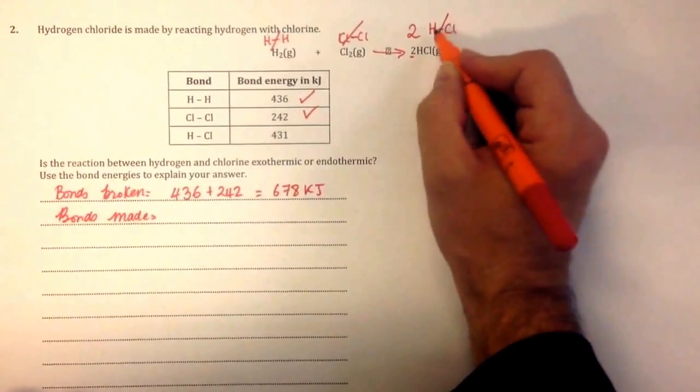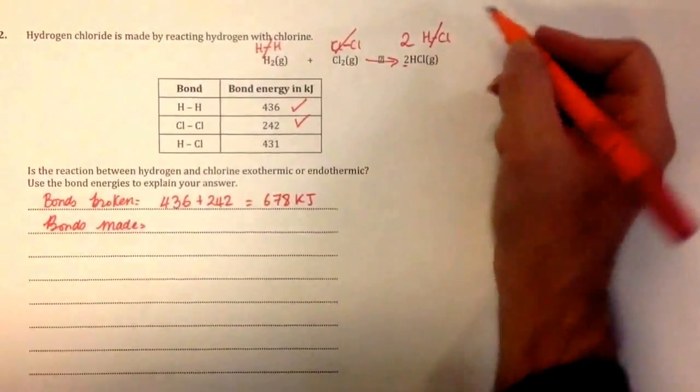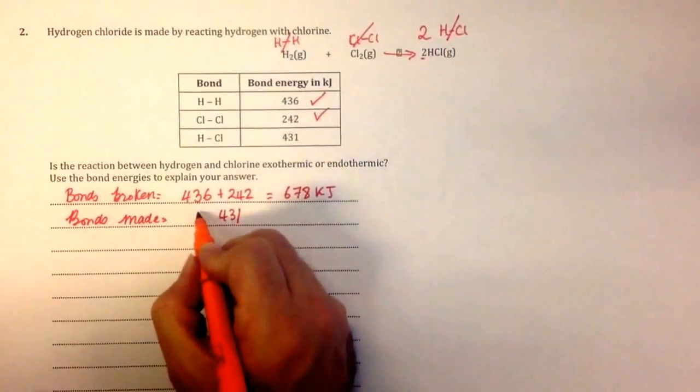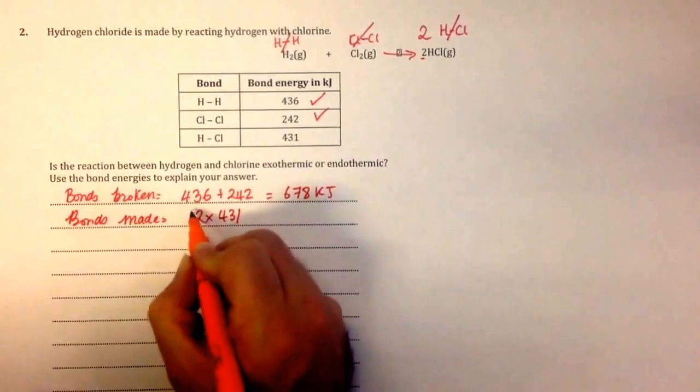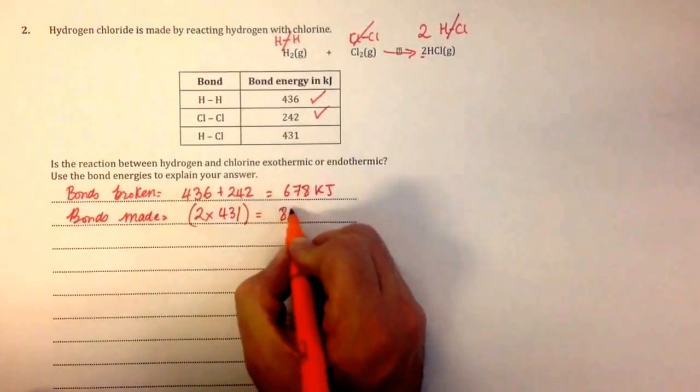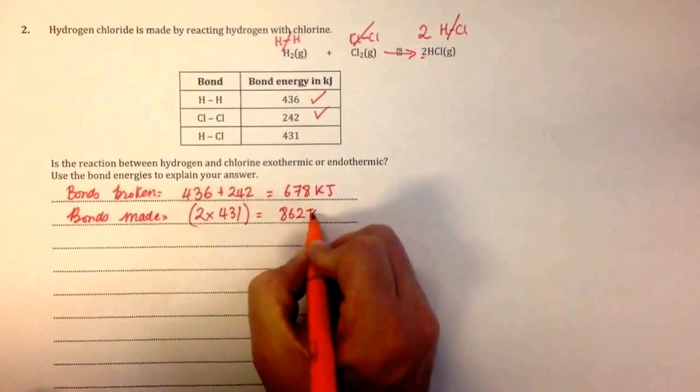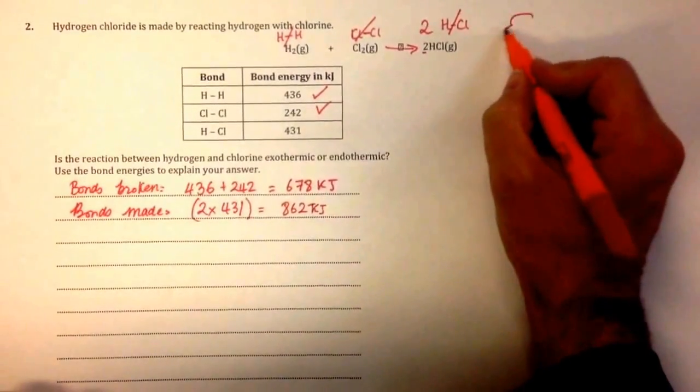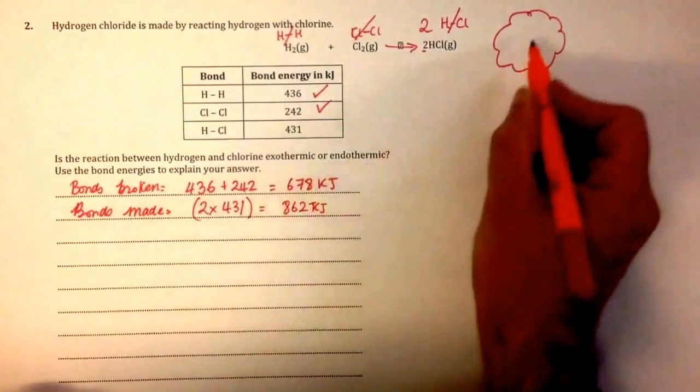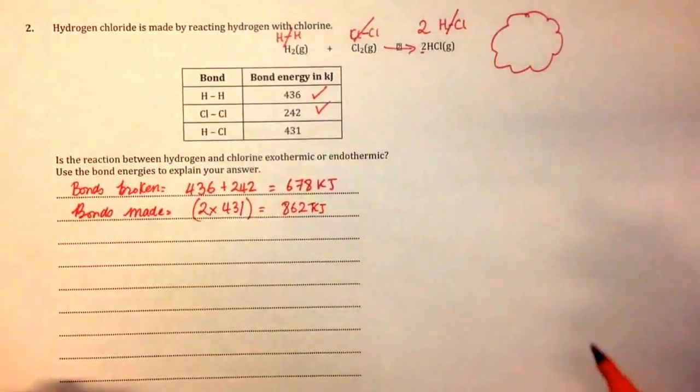The value of the HCl bond is 431, but there are two molecules. So you say 2 times 431 is 862 kilojoules. If there was something else on this side, you'd have to put a plus sign and add that onto the bonds that are made, but in this example there isn't.